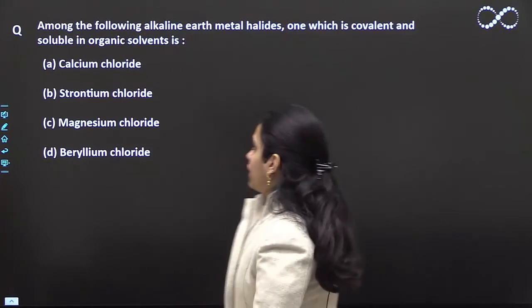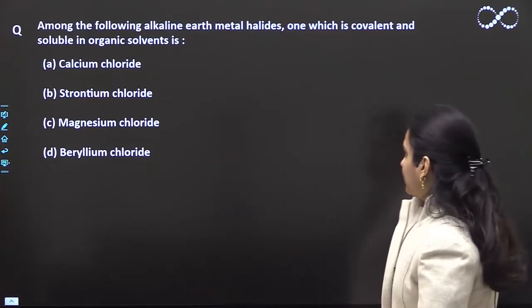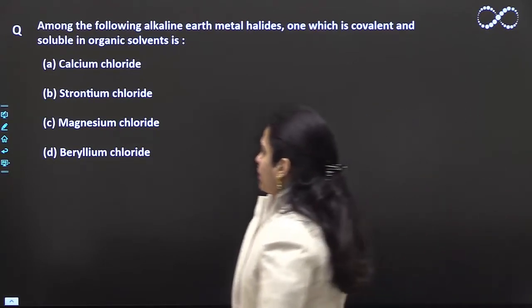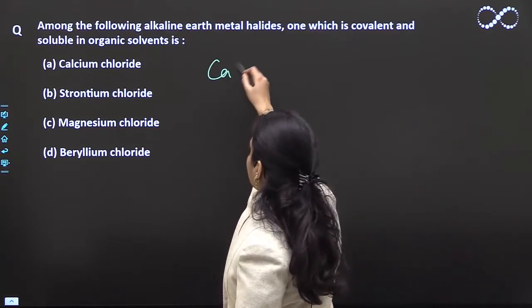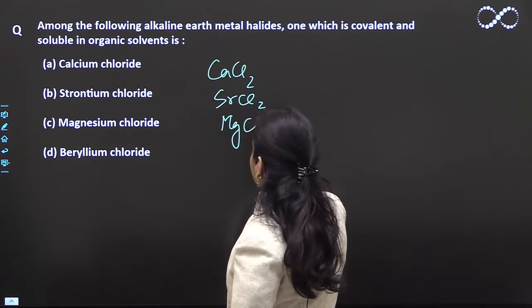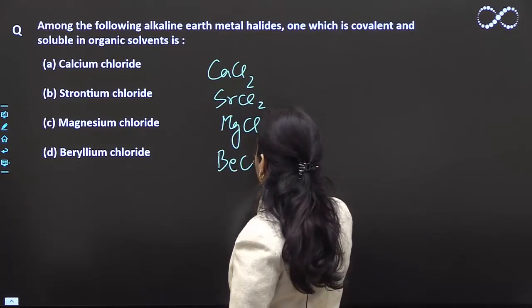Hello students, in this question you are asked: among the following alkaline earth metal halides, which one is covalent and soluble in organic solvents? The options are calcium chloride, strontium chloride, magnesium chloride, and beryllium chloride.